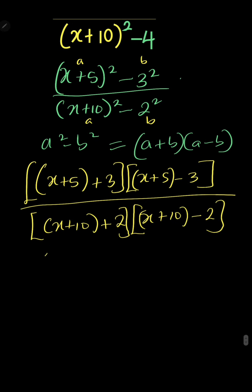So in the first bracket, x+5+3 is the same thing as x+8. (x+8) into (x+5-3) is x+2 because 5-3 is 2.